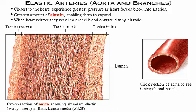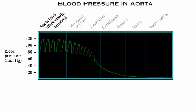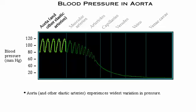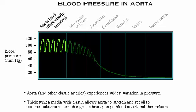Click on this section of the aorta to see its stretch and recoil. The graph shows blood pressure in various blood vessels of the systemic circulation. Note that the aorta experiences the widest variation in pressure of any vessel type. Its thick tunica media with elastin allows it to stretch and recoil to accommodate this pressure change as the heart pumps blood into it and then relaxes.